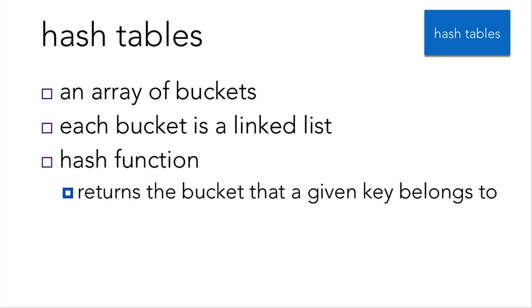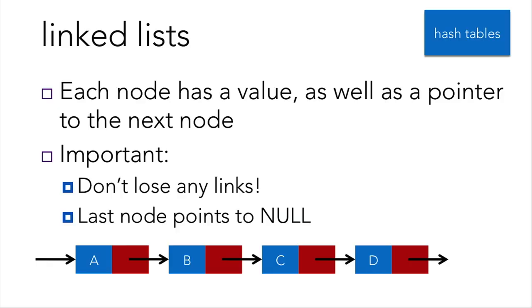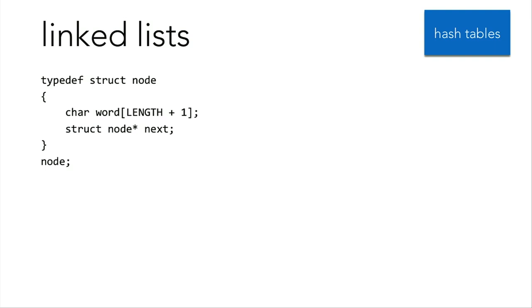Think of a hash table as an array of buckets, where the buckets are linked lists. We'll distribute all of our words amongst these multiple linked lists in an organized way using a hash function, which tells us which bucket a given key — a given word — belongs to. The blue boxes here contain values and red boxes point to another value-pointer pair. We'll call these pairs nodes. In linked lists, each node has a value as well as a pointer to the next value. It's very important that you don't lose any links, and the last node points to null. In C, we define our struct with a char array of length LENGTH plus 1 (where LENGTH is the maximum word length, plus 1 for the null terminator), and a pointer to another node called next.